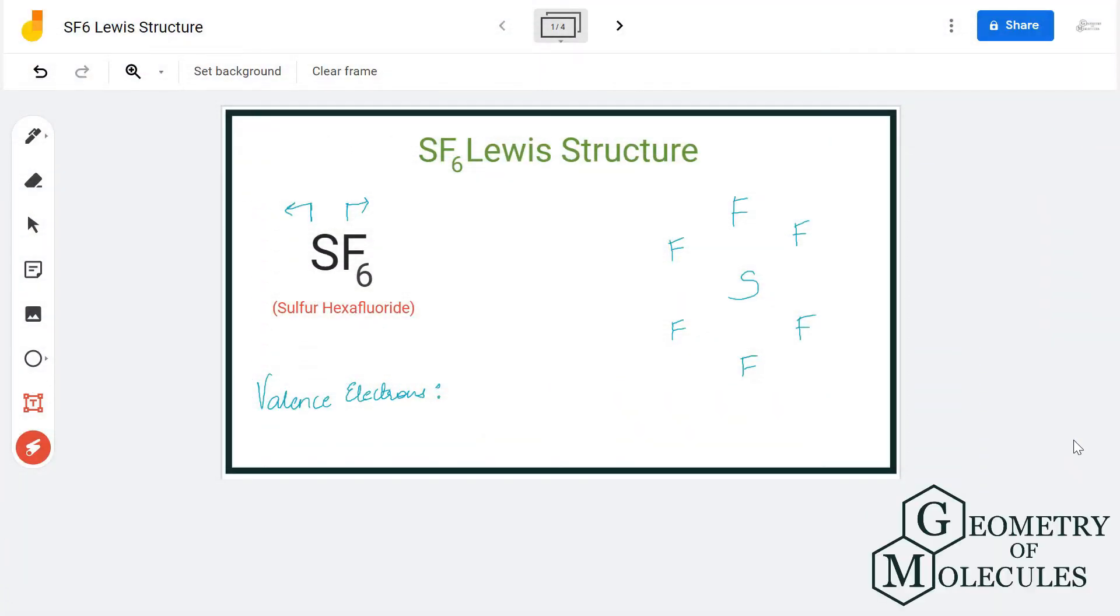Hi guys, in this video we are going to look at the Lewis structure of SF6. It's a chemical formula for sulfur hexafluoride. As it has six fluorine atoms in this molecule, the term hexa is used.